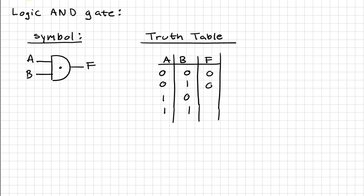For zero zero, our output is zero. For zero one, our output is zero. For one zero, our output is zero. And for one one, our output is one. So that's the truth table for an AND gate. Remember, if one of its inputs is zero, the output is zero.